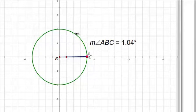When we rotate around and stop the angle, when the arc length is equal to the radius, then we have a radian.